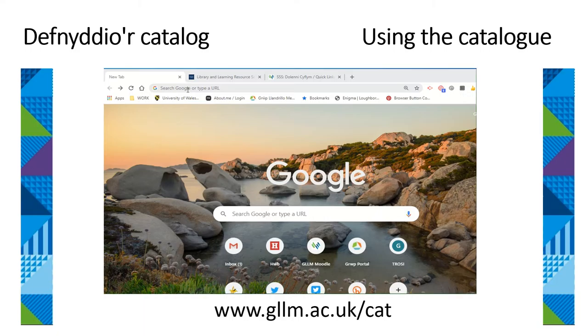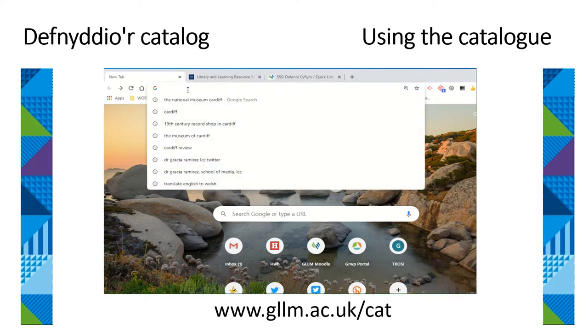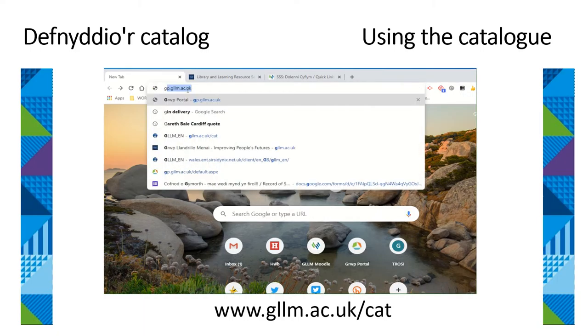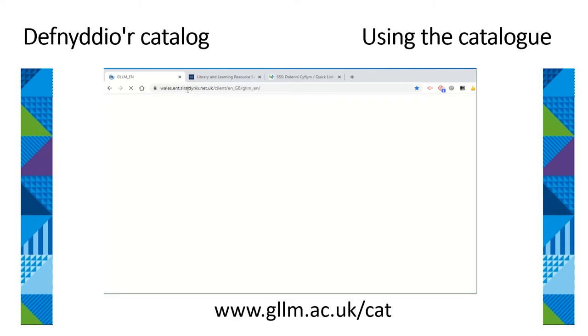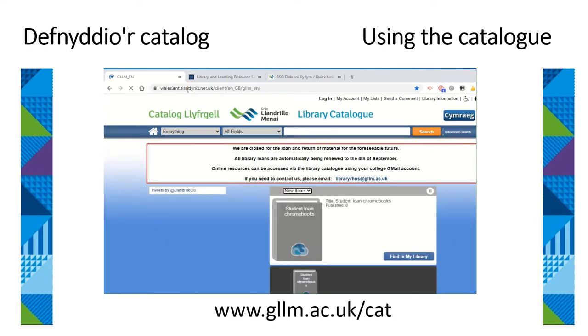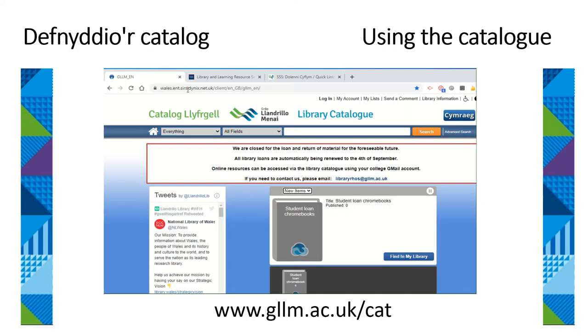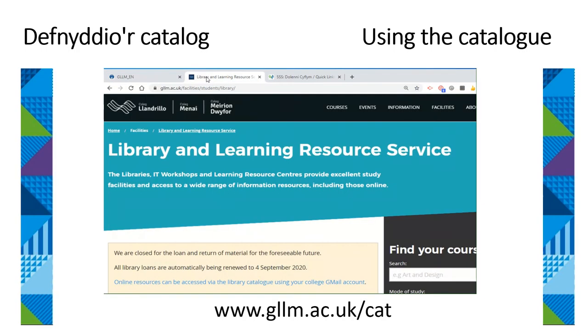The quickest way to access the library catalogue is to open your browser and type in gllm.ac.uk/cat. You'll be redirected to the library catalogue home page.